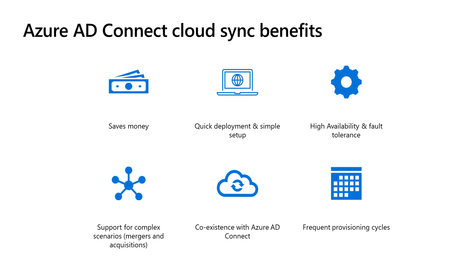If you find yourself needing to provision for multiple Active Directory forests that have no network connectivity between them, as we see in complex scenarios like mergers and acquisitions, Cloud Sync allows you to deploy agents into each of the isolated networks that can communicate independently between the forest and Azure AD. If you already have Azure AD Connect Sync deployed in your environment, that does not exclude you from deploying Cloud Sync as well — Cloud Sync can be used side by side with Azure AD Connect Sync, and it can even be used to provision from the same directory, which is an important capability for migrating from one tool to the other. And lastly, Cloud Sync can keep Azure AD up-to-date with greater frequency, so no more having to wait 30 minutes for on-prem changes to be seen in Azure AD as you have to with Azure AD Connect Sync.